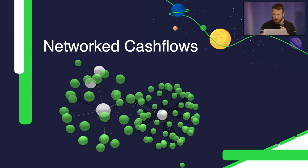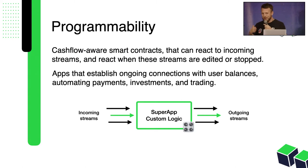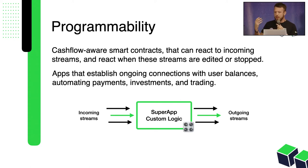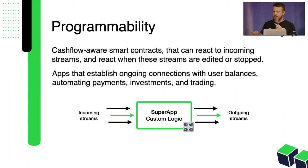So how do you do this? Through programmability — we're all at an Ethereum conference. We know that payments alone are not going to make it. You need programmability. In the case of Superfluid, that means you can build applications that react to streams. You can manipulate incoming and outgoing streams. By doing this, you can create financial applications that move funds in real-time without needing to make multiple transactions. That's the key to Superfluid — once you open a stream, the money just keeps flowing without having to ever touch it again.